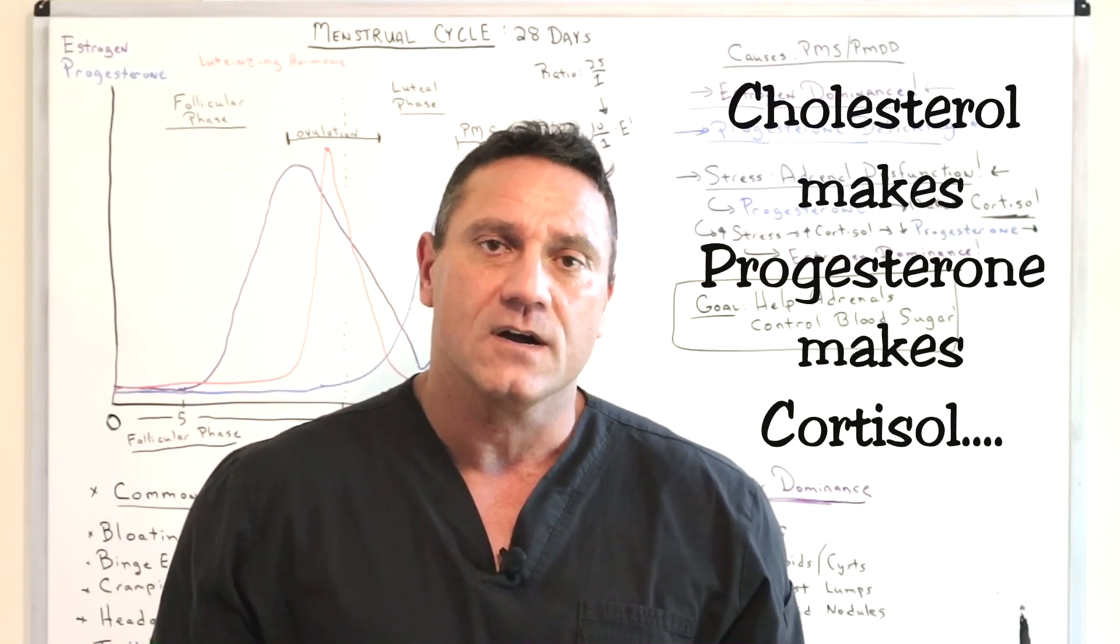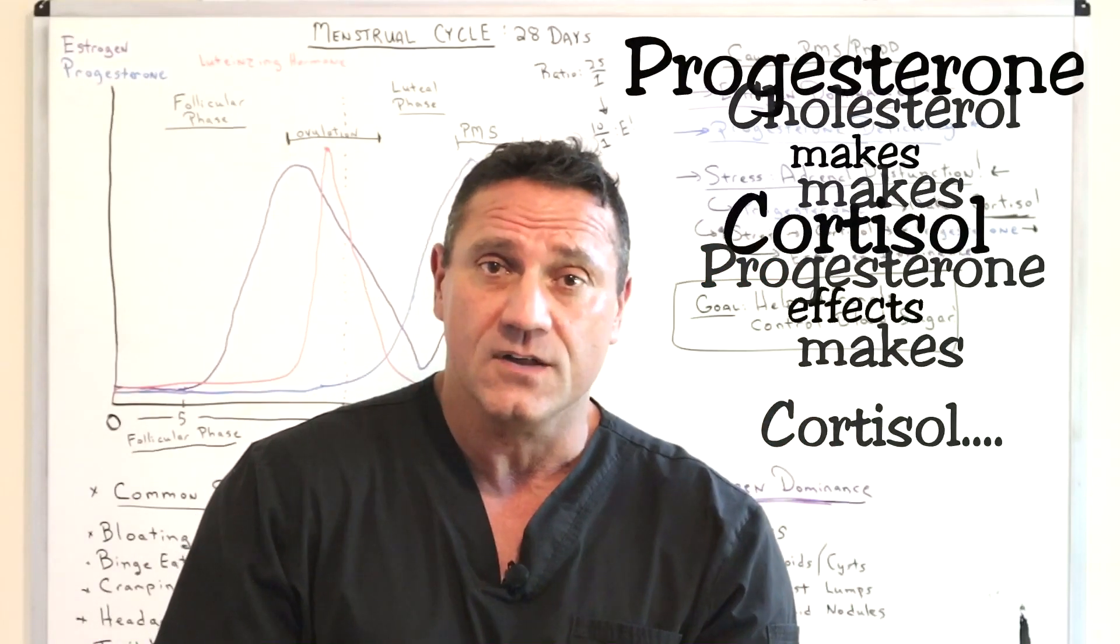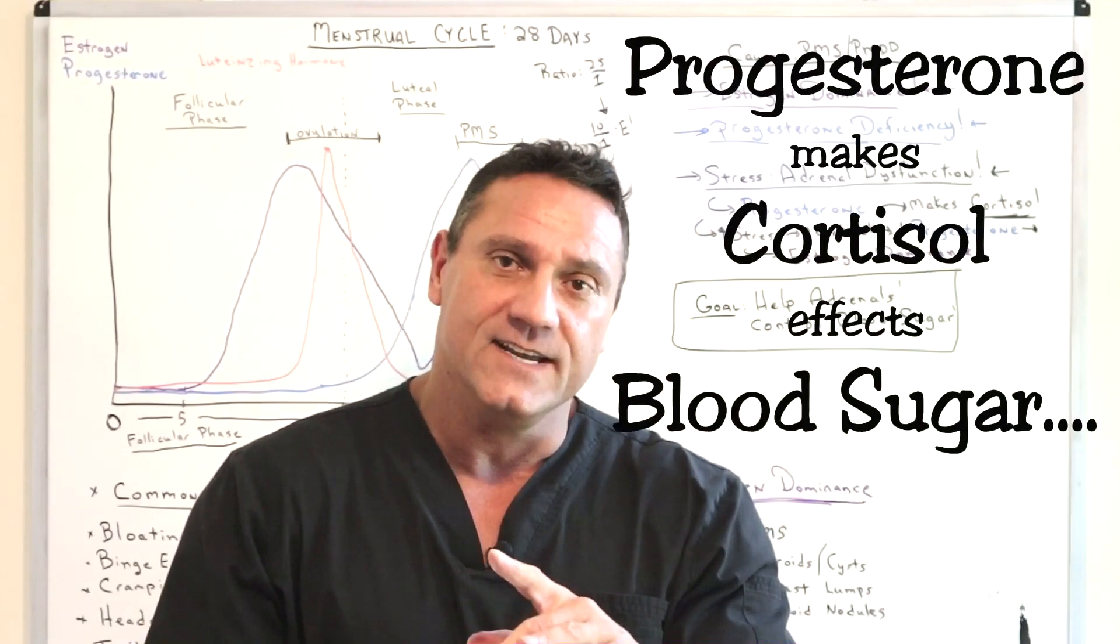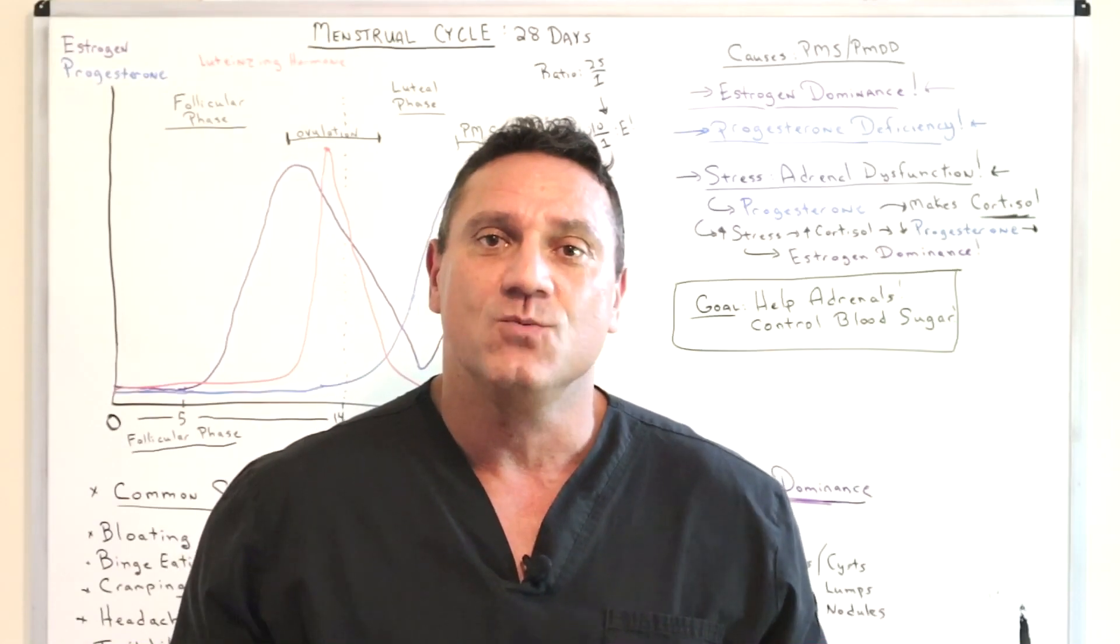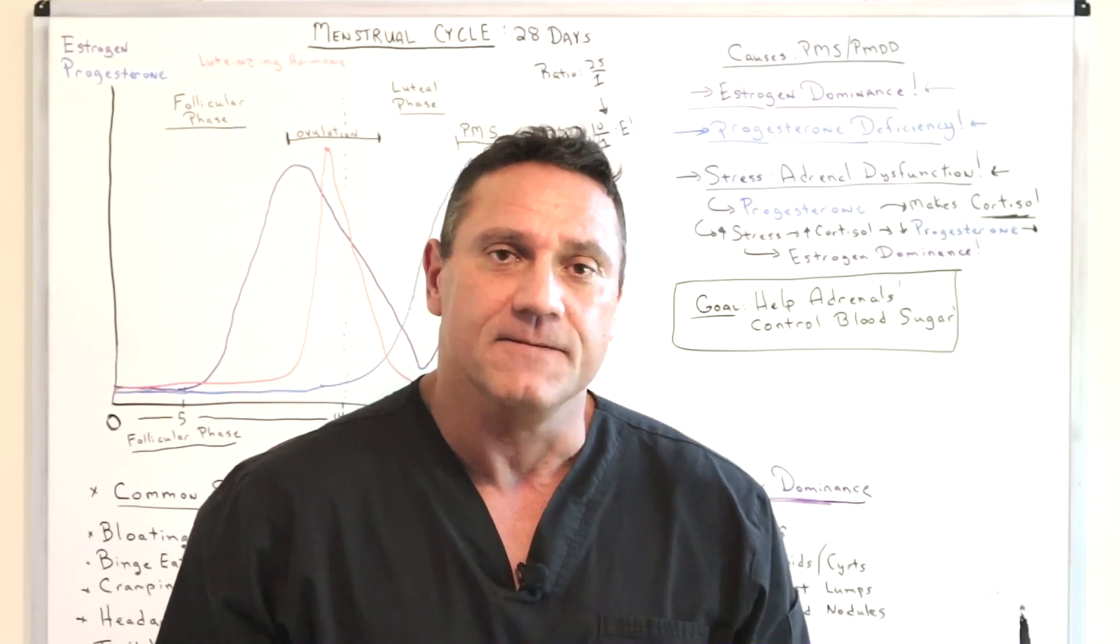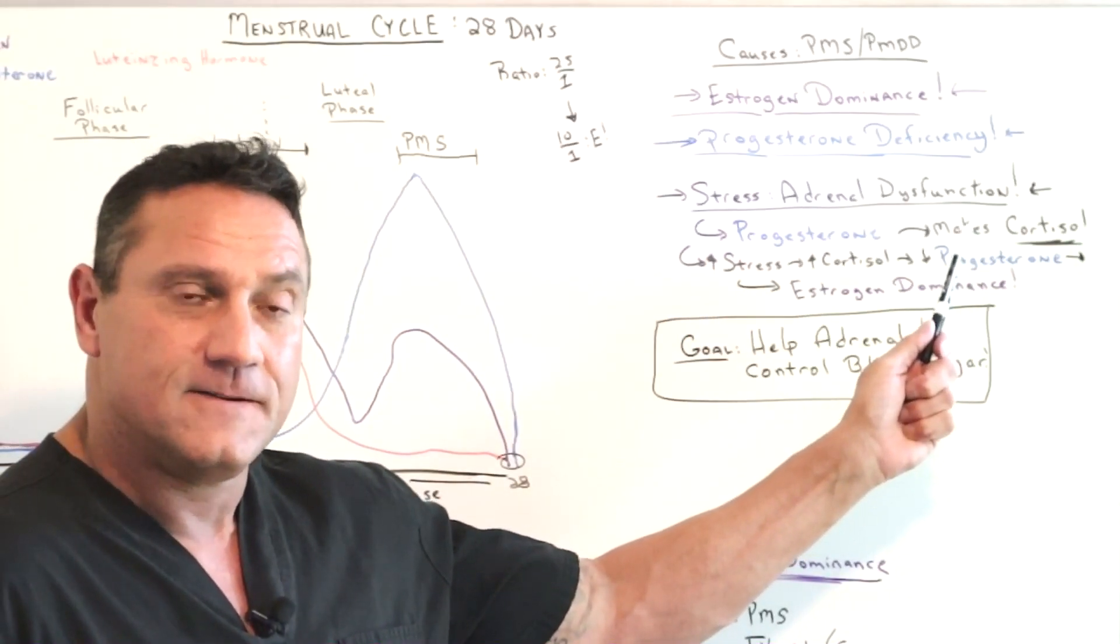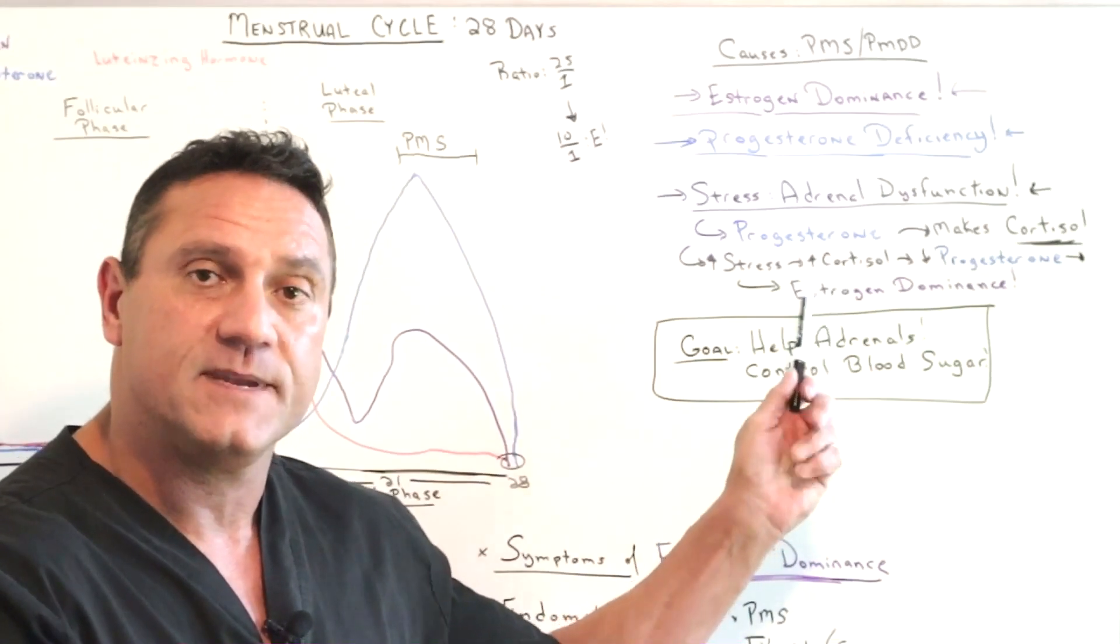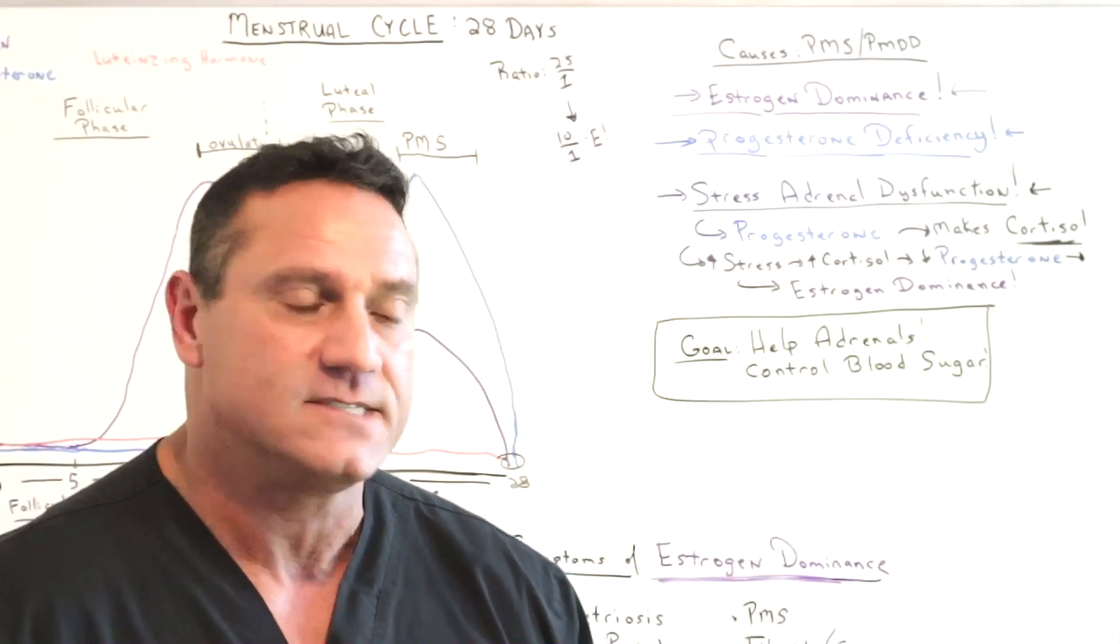So the more stressed out you are, you're making more, your progesterone is making more cortisol. Blood sugar issues, because it's a glucocorticoid, this is when you start craving sweets because you want something sugary. What happens? Progesterone makes cortisol. Increased stress secretes more cortisol because cortisol dominates the body. That's what happens.